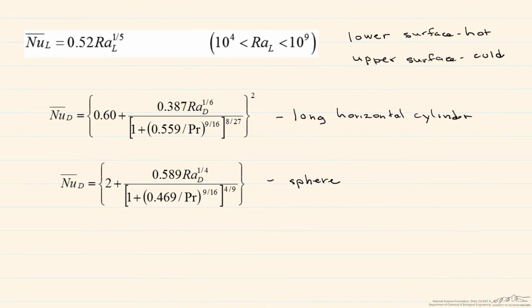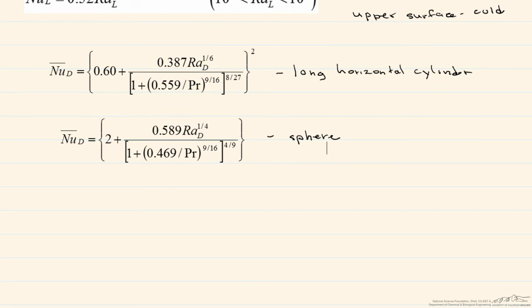One thing also to keep in mind is that all the properties are calculated at the film temperature, which is Ts plus T infinity divided by 2, where this temperature is in Kelvin. So in future screencasts, we'll take a look and use some of these correlations in a practical application.